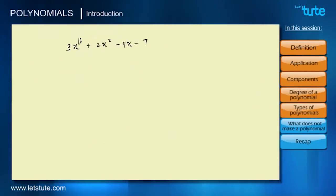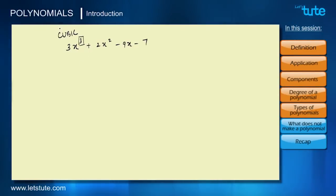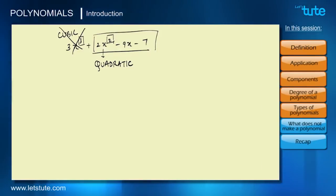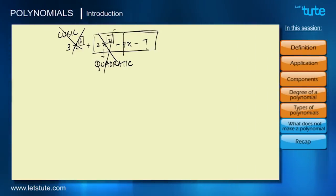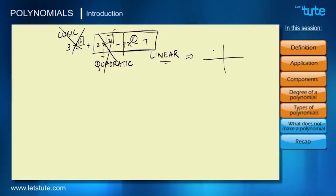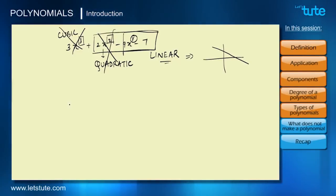Based on degree, we can classify polynomials into various types. A polynomial with degree 3 is called a cubic polynomial. If the highest degree is 2, it is called a quadratic polynomial. If the polynomial has only terms like 9x − 7, where the highest power is 1, it is called a linear polynomial. It is called linear because when plotted on a graph, it gives a straight line.